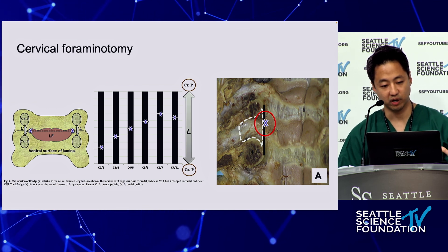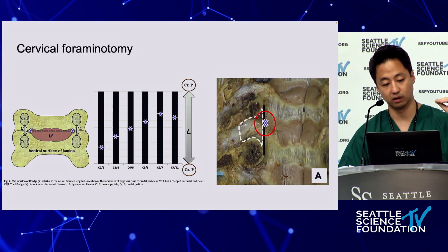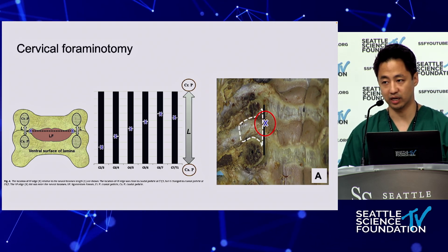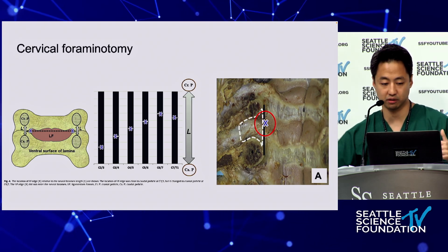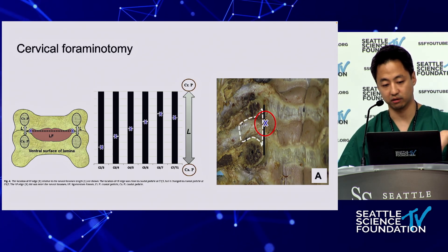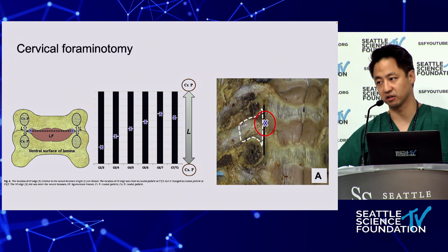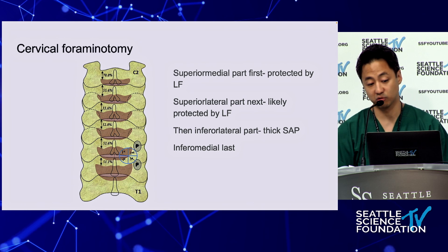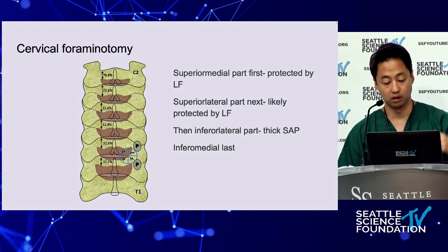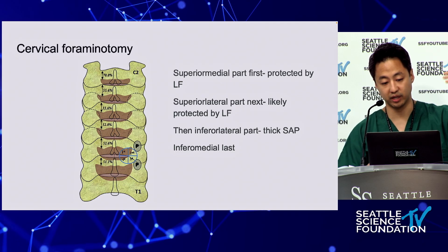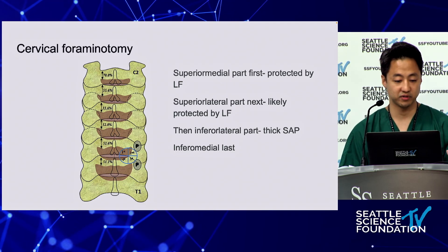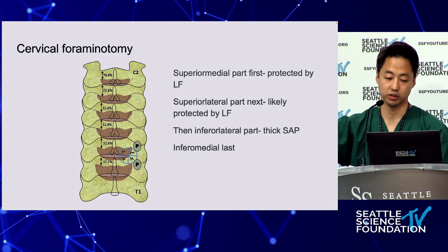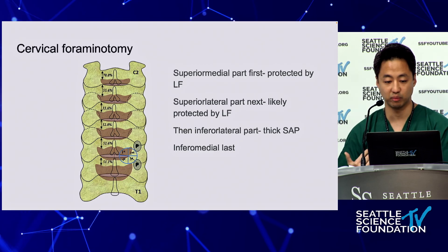From a foraminotomy perspective, the ligamentum flavum attaches more cranially to the pedicle as you go down — just like the thoracic. But that transitions as you go up toward C2, where it finds a pattern similar to lumbar spine. Traditionally, laminoforaminotomy is performed at the medial cranial superior portion, and depending on the side, surgeons tend to drill the cranial attachment first so that you can disconnect it before tackling the more dangerous distal areas.